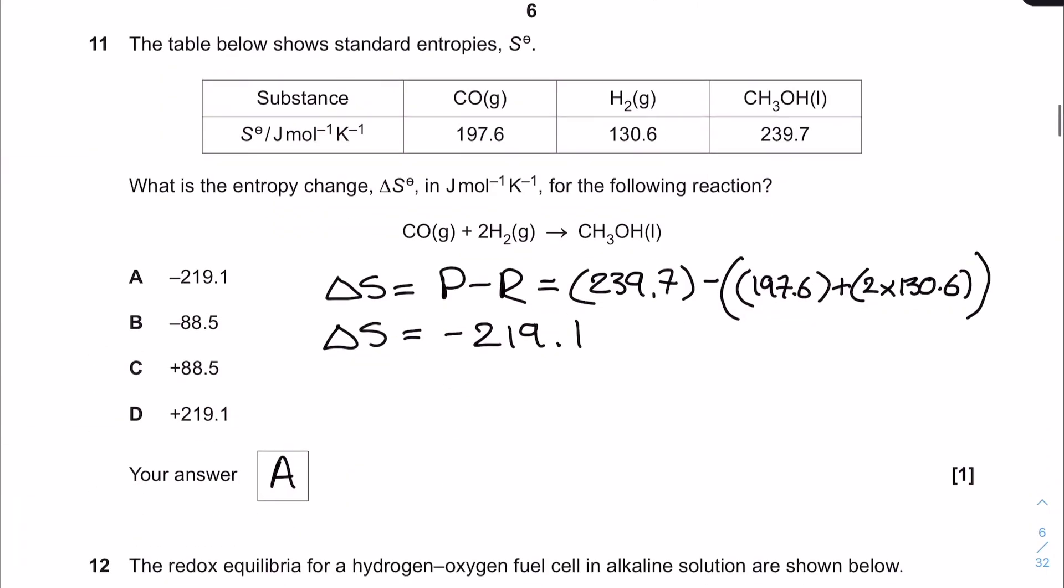Moving on to question 11. Don't forget that delta S is products minus reactants. When we're asked for the entropy change, it's product minus reactants. The correct answer here is -219.1, which is option A. I did notice that option D is the same value but with the opposite charge, and I think that is quite sly.